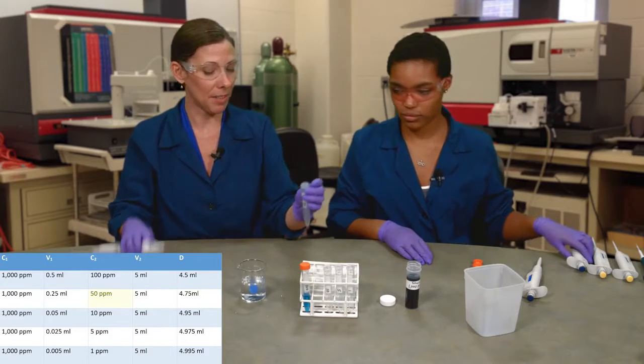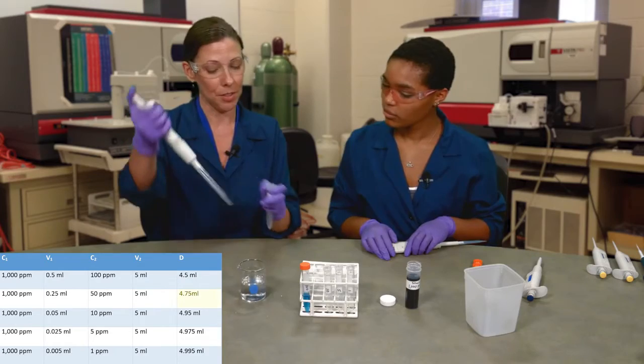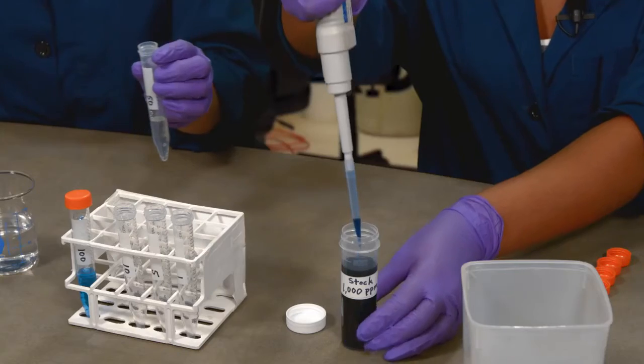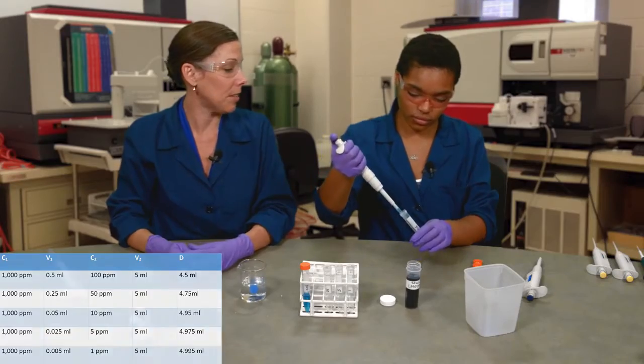To make the 50 ppm standard, we'll use 4.75 milliliters of diluent and 0.25 milliliters of 1000 ppm stock solution.